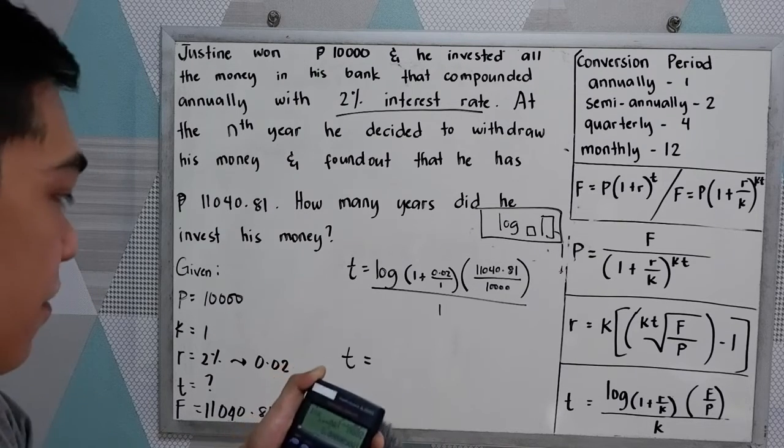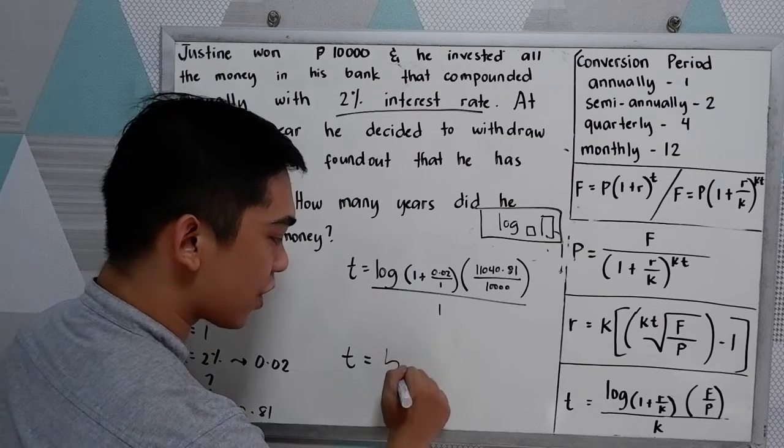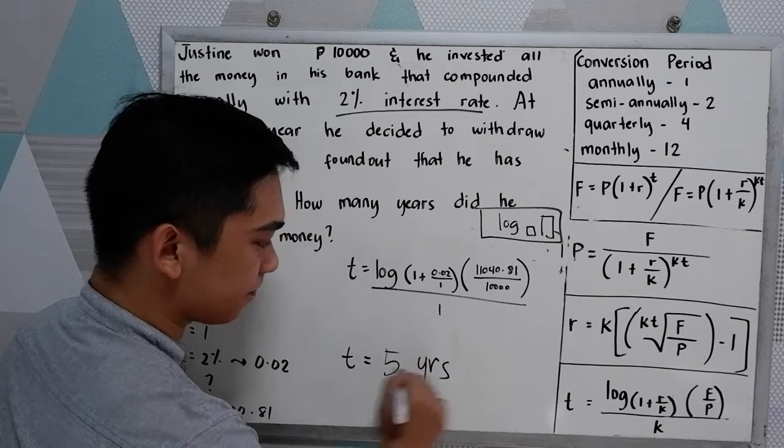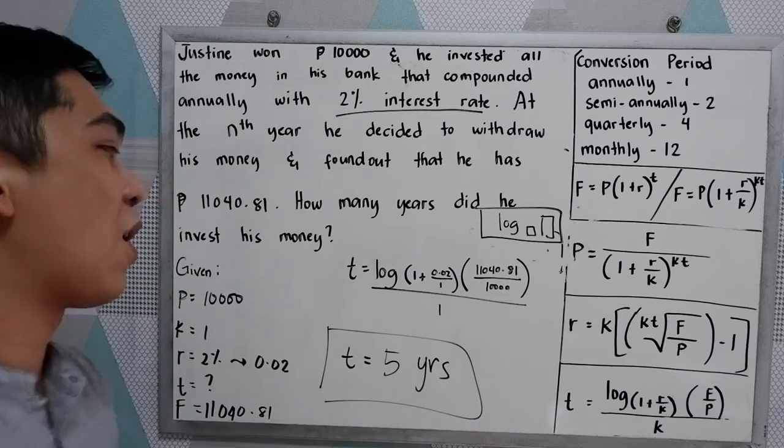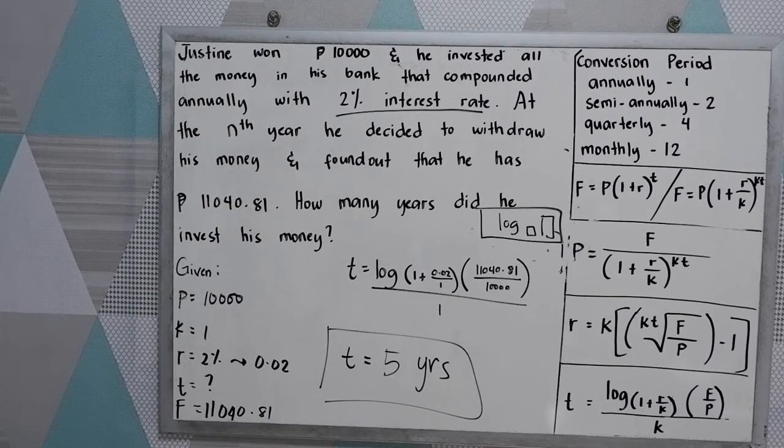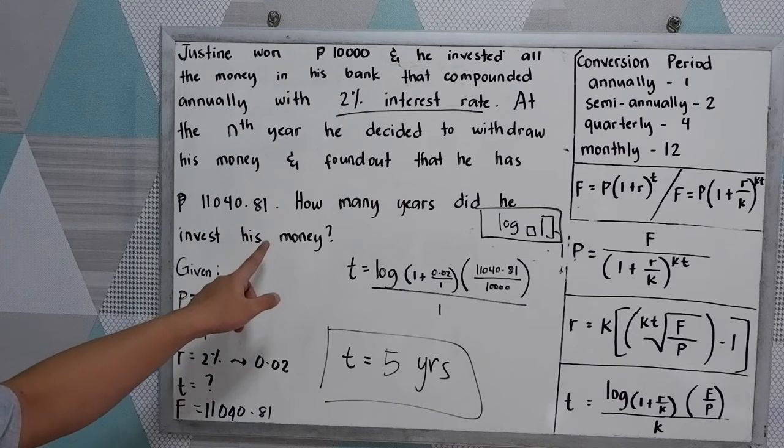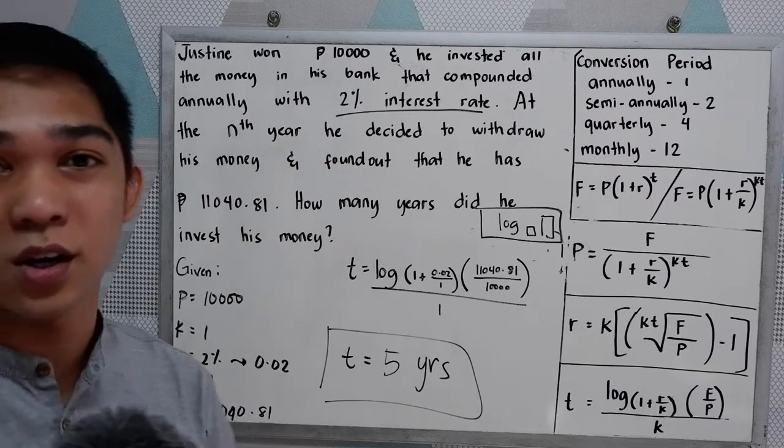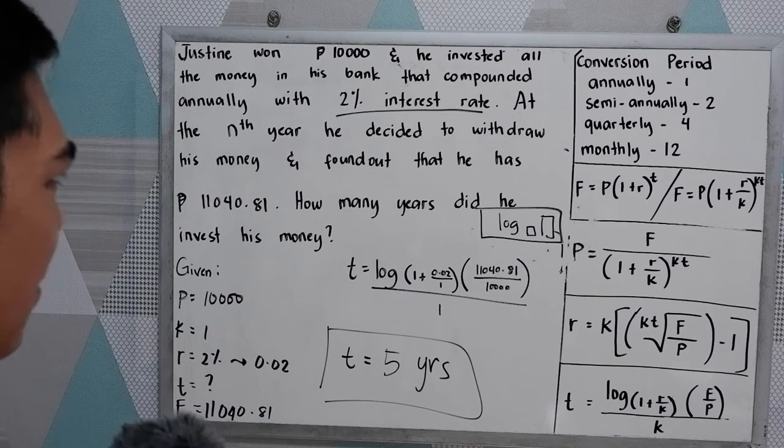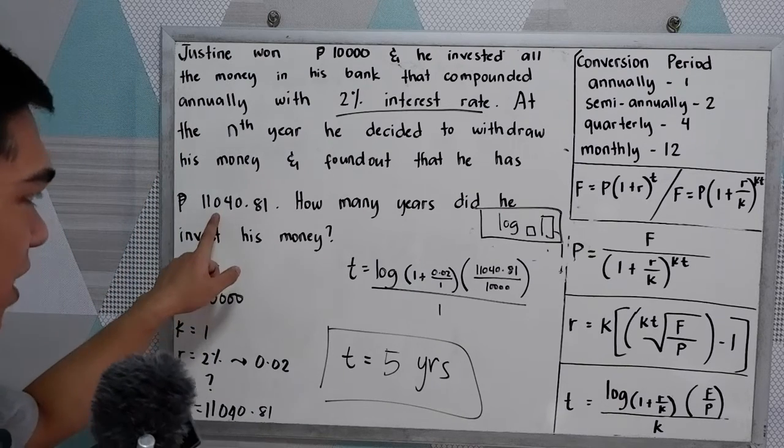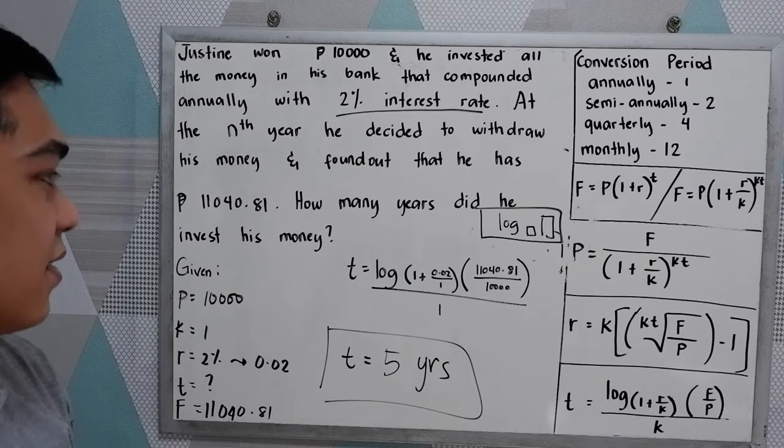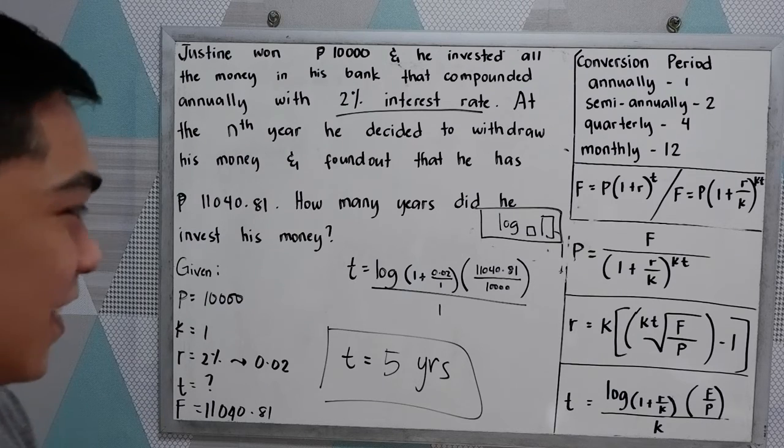And that will give us 5 years. That would be our time. So after 5 years, the amount will be 11,040.81. He invested 10,000 pesos only, so the interest is 1,040.81 after 5 years.